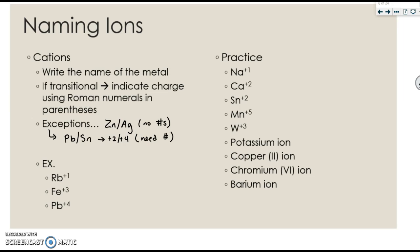Let's go through and do some examples, and then you'll have a chance to try some. So Rb+1, you just look on the periodic table, and you would see that that's rubidium. It's not transitional, so it does not need a Roman numeral. Fe is iron, but it is a transition metal, so it would require the Roman numeral three. And lead is one of the exceptions above. So even though it's not transitional, it still needs a Roman numeral. So this would be lead four.